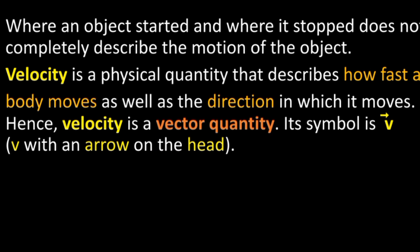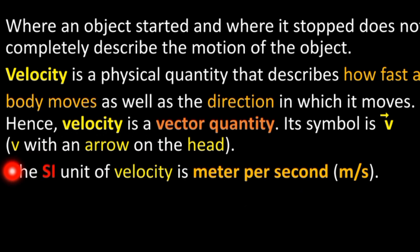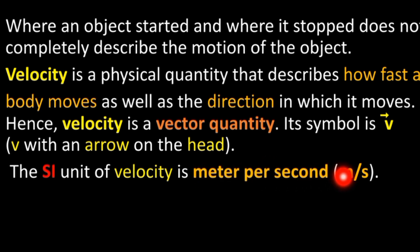Because velocity is a vector quantity, it has both magnitude and direction. The SI unit of velocity is meter per second (m/s).